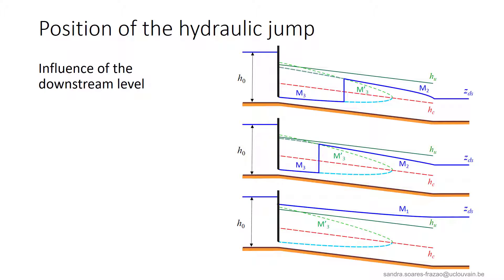Then, if the downstream level further increases and becomes larger than HU in the present example, we have a M1 profile instead of a M2 profile. And in our case, this M1 profile does not cross the M3 prime curve anymore.